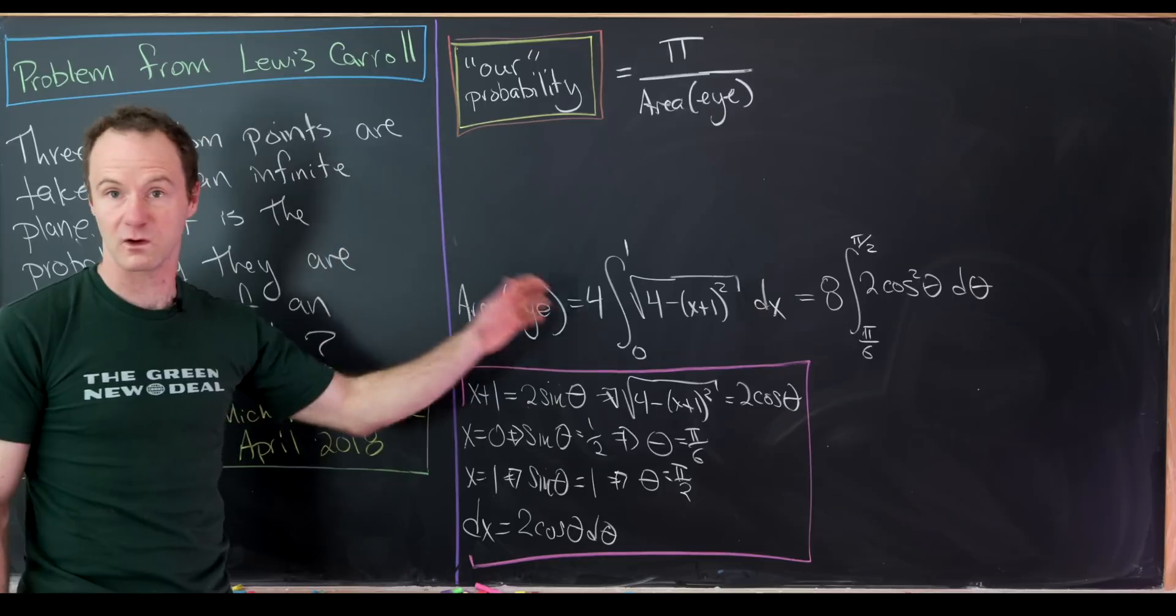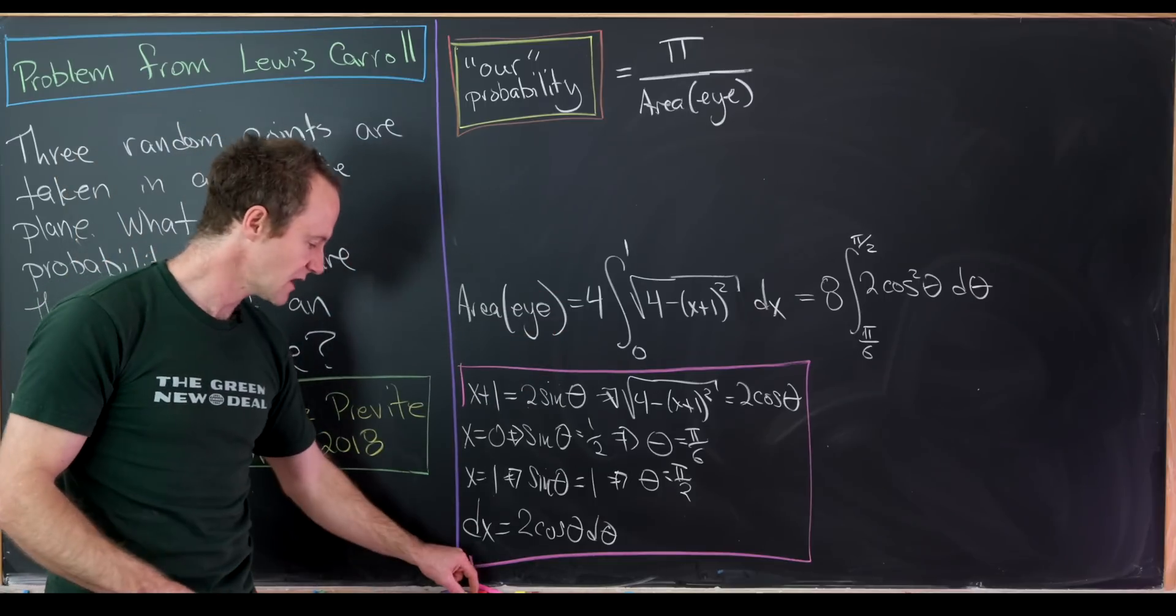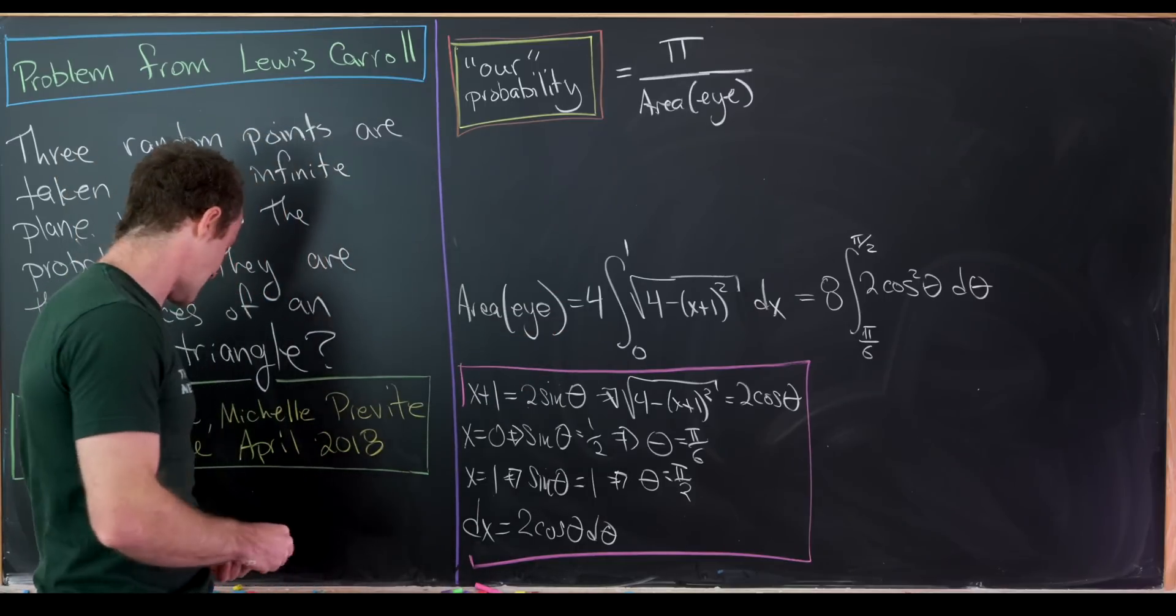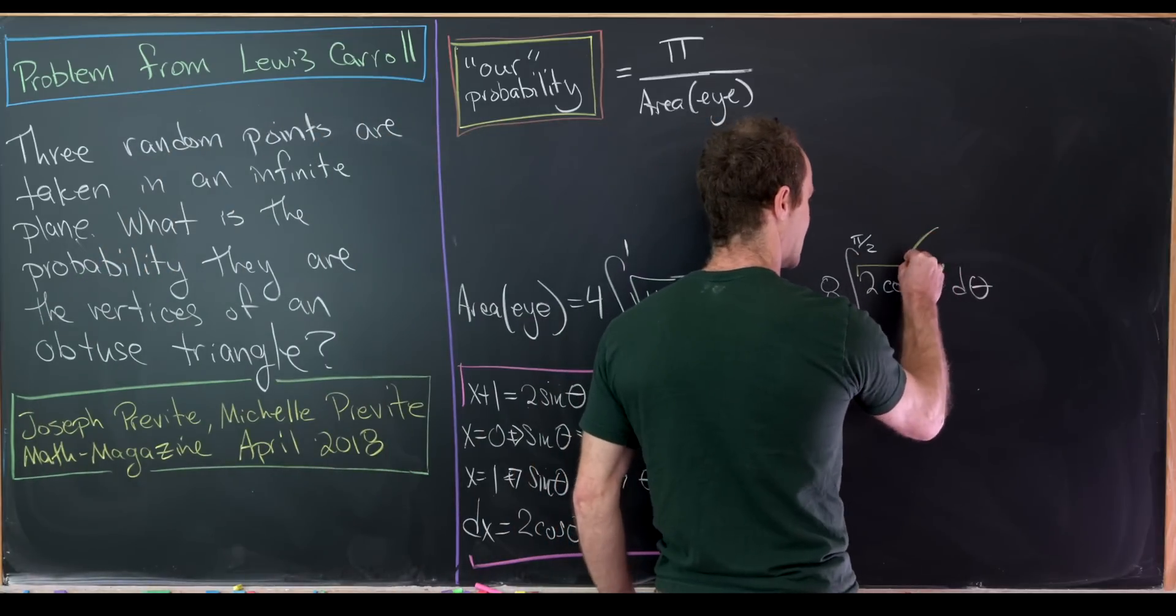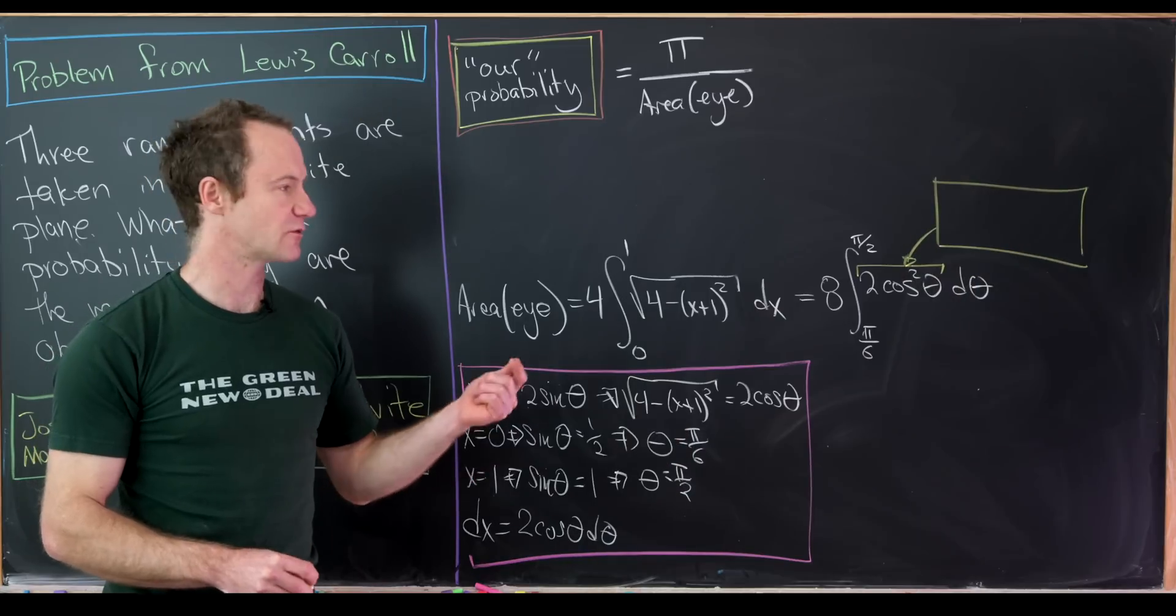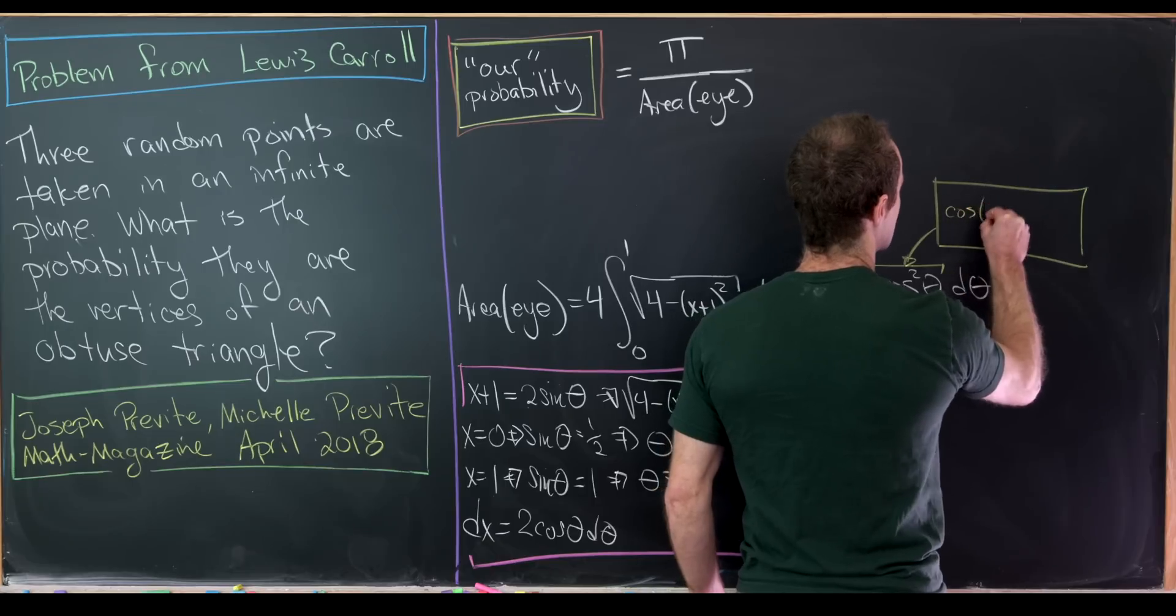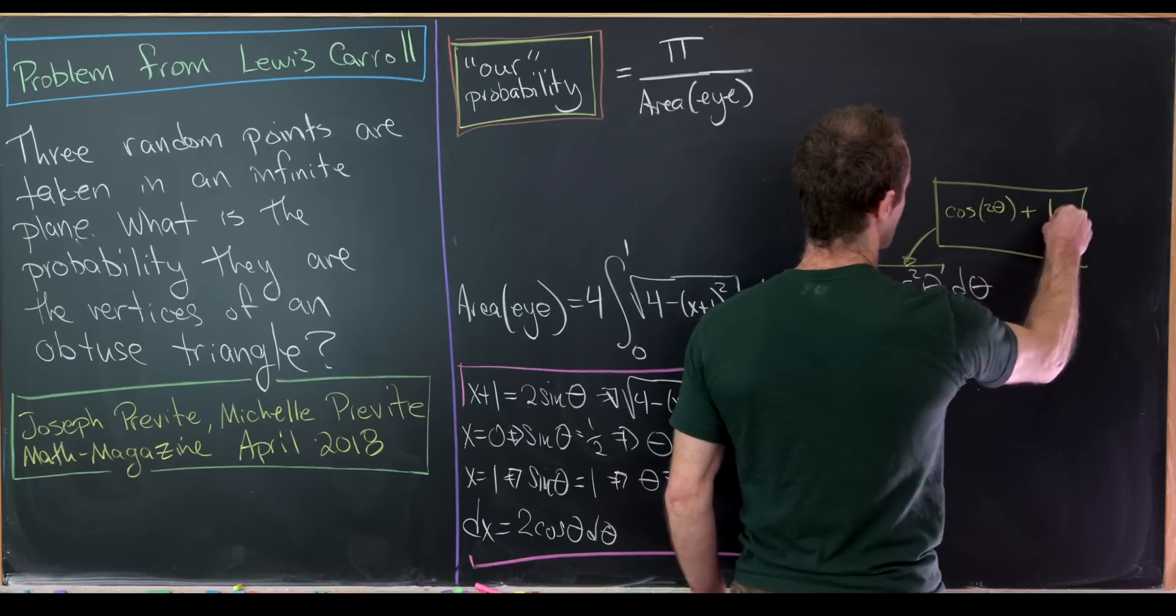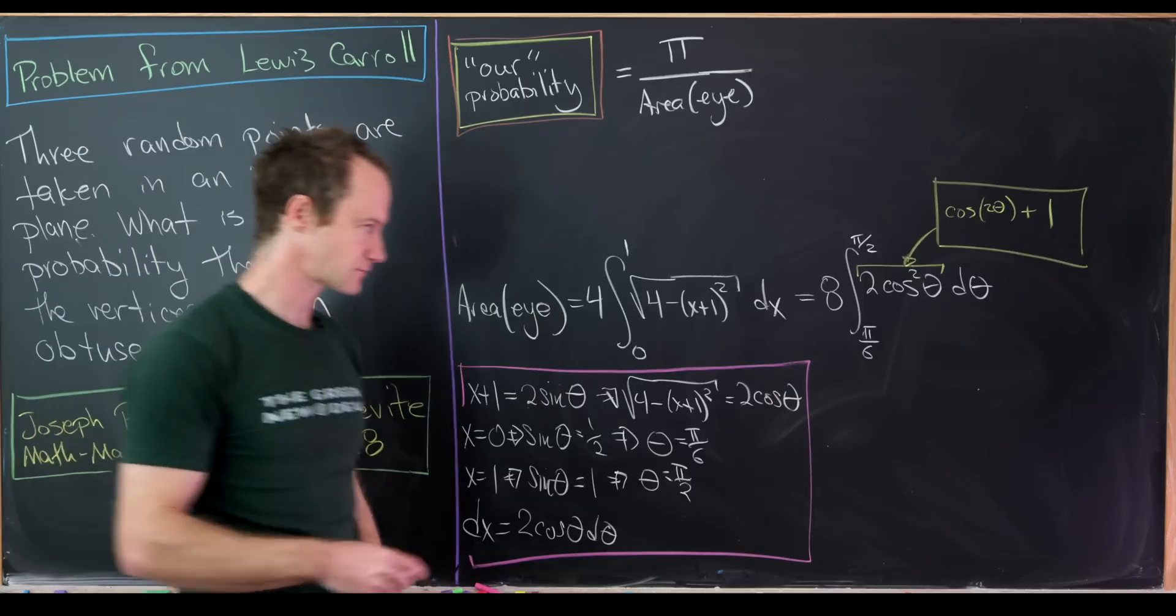And then we'll have a 2 and a cosine squared theta d theta. One cosine from the square root of 4 minus that stuff and one cosine from the dx. But now we'll use a semi-well-known trigonometric identity, something that you'd probably learn in a pre-calculus or trigonometry class. And that is that we can rewrite 2 cosine squared as cosine of 2 theta plus 1. So it's something like a power-reducing formula.